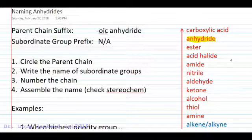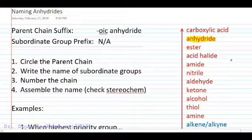We're going to follow our general strategy of circling the parent chain, writing the name of the subordinate groups that intersect that parent chain, we'll number the chain, and assemble the name and check for stereochemistry as we do that.